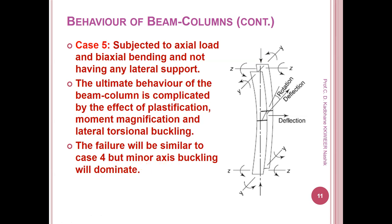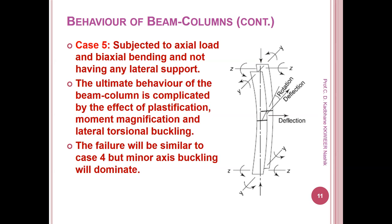The minor axis will buckle first and then it may twist towards the major axis or fail directly about the minor axis, depending on the length of the column, the geometrical features, moment of inertia, radius of gyration, and type of section. Moment amplification: as the bending moment acts on a beam column, when there is a large axial load, the axial load produces a moment due to member deformation. The final bending moment M is the sum of the original moment and the moment due to axial load — this is called moment amplification. The linear analysis does not account for displaced geometry; hence, iterative second-order methods should be used to find deflections and secondary moments produced by the axial load.